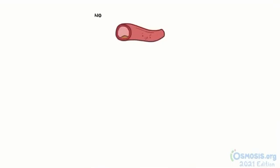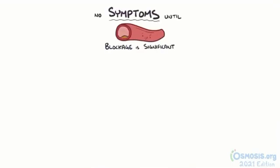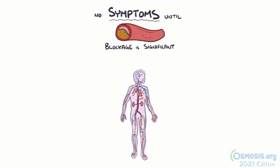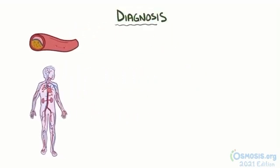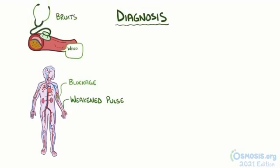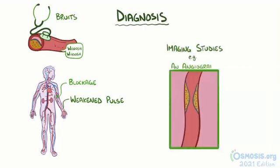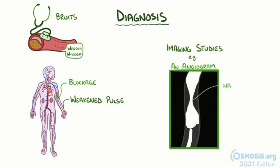Narrowed and hardened arteries don't generally cause symptoms until the blockage is significant. Once that happens, there might be pain distal to the affected artery, including chest pain or angina if it's a coronary artery, or foot and leg pain if the blockage is in an artery in the leg. If the artery goes to the brain, it can cause stroke-like symptoms like confusion or weakness. If the artery goes to the kidneys, it can cause high blood pressure or renal failure. Diagnosis usually starts with a physical examination, which can show a weakened pulse below the blockage, or bruits — a whooshing sound over the arteries heard through a stethoscope. An imaging study like an angiogram, where a dye is injected into the blood vessel, can show narrowing of the vessels.